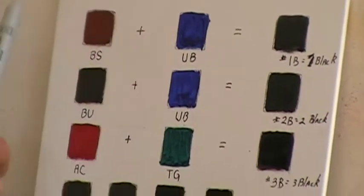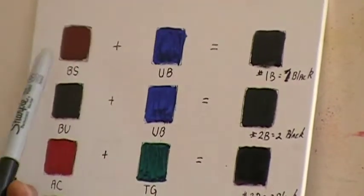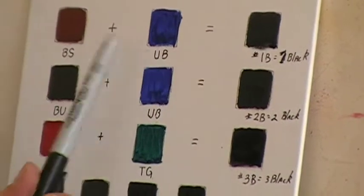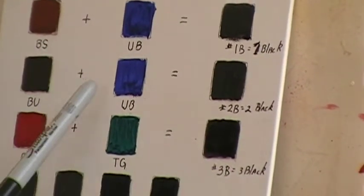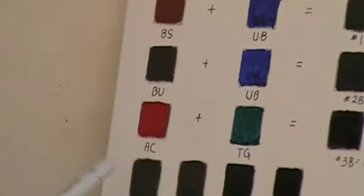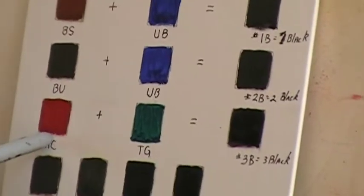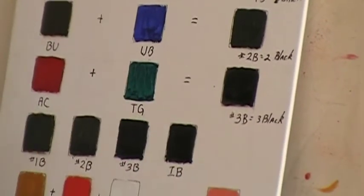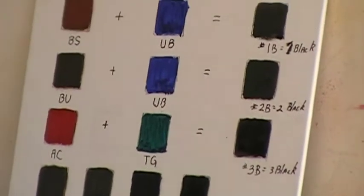So I'm showing you that with roughly equal amounts I can get a black by mixing either burnt sienna and ultramarine blue or burnt umber and ultramarine blue. I can also get a very intense black mixing alizarin crimson and phthalo green. Again these were in the first row.